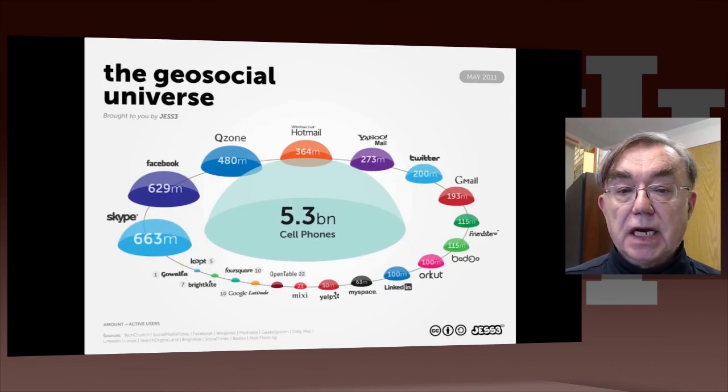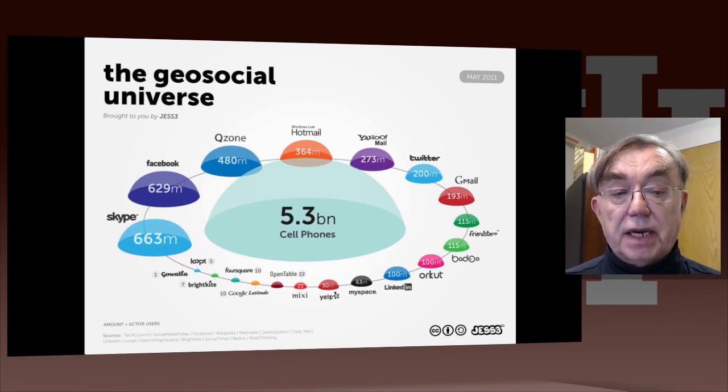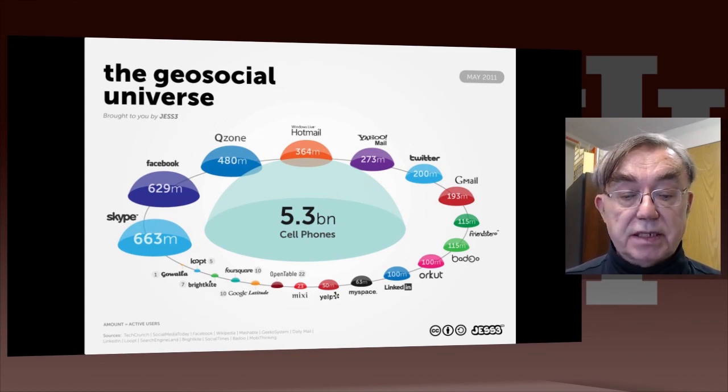Here's a nice plot from a company called Jess, called the Geosocial Universe. And it has in the middle 5.3 billion cell phones. Then around there, we have floating around various sources of data, of which the largest is Skype, of 663 million, and it goes to Gmail, and Hotmail, and Facebook, and Yahoo, and all sorts of other, LinkedIn, and MySpace, and so on. So this is the universe of data that's driving social interactions.